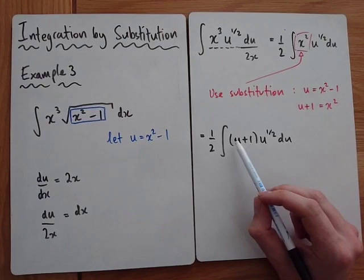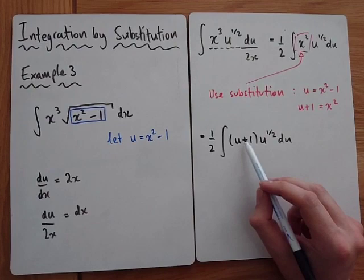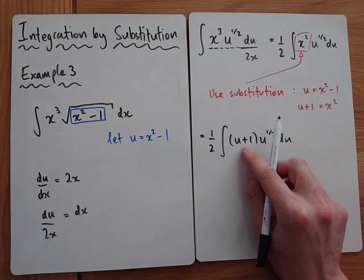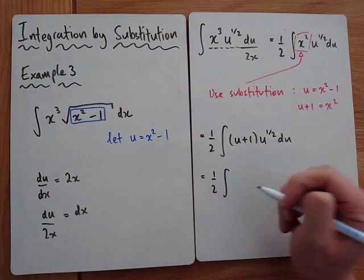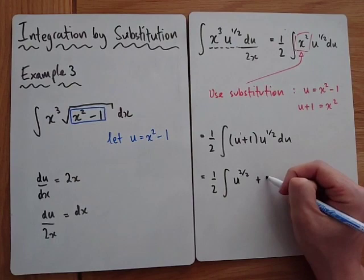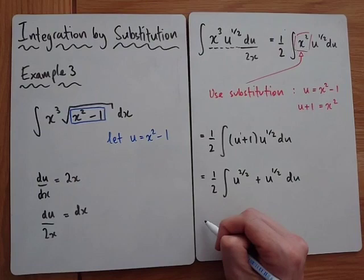We've now replaced all the x's, but can we integrate this? We've got powers of u: u to the one, u to the half, and the constant 1. If we expand the bracket we can get something we can integrate. u times u to the half adds the powers to give u to the 3/2. One times u to the half gives u to the half. So now we have it in a form we can integrate.